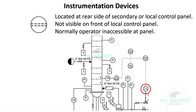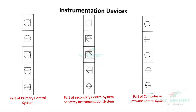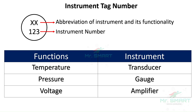Instruments mentioned inside a circle with double horizontal dashed line represent that the device is located at the back side of the secondary or local control panel, not visible at the front side, and cannot be accessed by the operator normally. Symbols enclosed within a square box represent they are part of the primary control system. Symbols in a diagonal square within a square box represent they are part of the secondary control system or safety instrumentation system. Symbols in a hexagon represent they are part of a computer or software control system. Instrumentation representation will have an instrumentation tag and an instrumentation number.